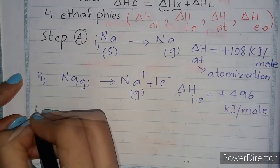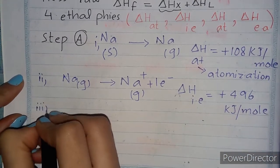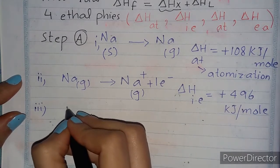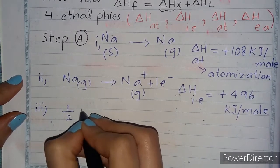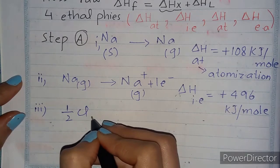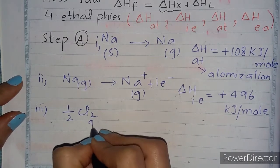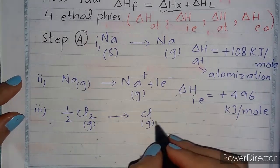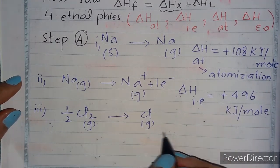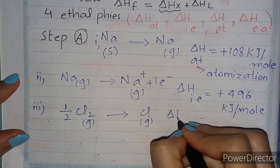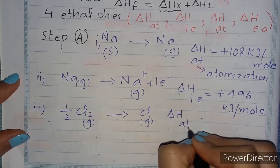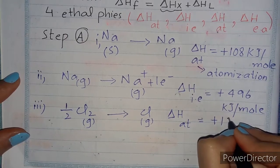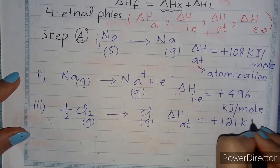Third step: enthalpy of atomization of chloride. Cl₂(g) converts into a single Cl atom in gaseous form: ½Cl₂(g) → Cl(g). The enthalpy of atomization here is endothermic with a value of +121 kJ/mol.